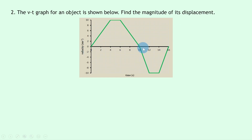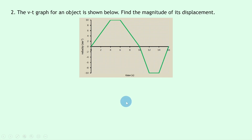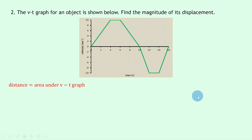In this velocity-time graph the parts haven't been split up for us, so we'll need to do that ourselves. We've got a uniform acceleration, followed by constant velocity, followed by constant deceleration to rest, and then motion in the opposite direction — an acceleration in the opposite direction, another constant velocity, and then a uniform deceleration to rest. Distance equals the area under a velocity-time or speed-time graph, so we'll split the graph into rectangles and triangles.